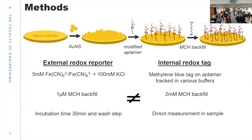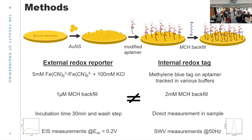Another key difference: the internal redox tag allows direct measurement in the sample — after electrodes are modified, I just put the sample on the surface and take a direct measurement within seconds of equilibration. Whereas for the external redox reporter, there is an incubation time of 30 minutes, followed by a wash step, then adding the ferricyanide to take the measurement. The external redox reporter method uses impedance measurement — measuring resistance on the electrodes — while the internal redox tag tracks the methylene blue tag with square wave voltammetry, measuring current.